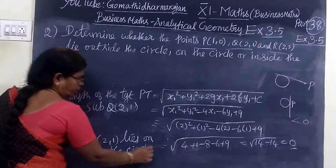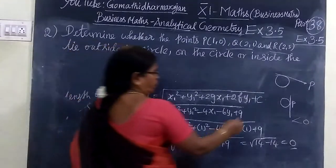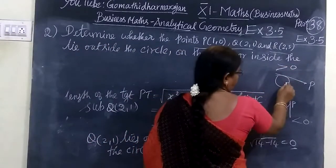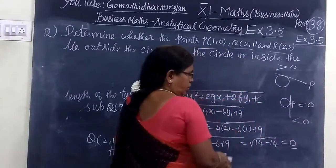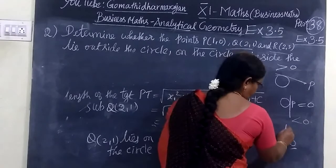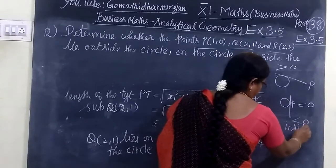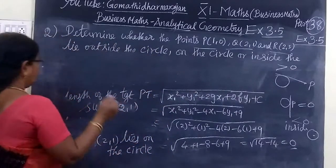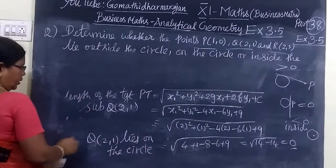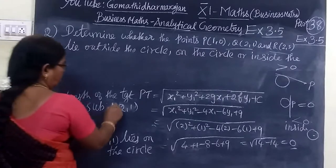To recap: greater than 0 means outside the circle, equal to 0 means on the circle, less than 0 means inside the circle. Then the next one is R.